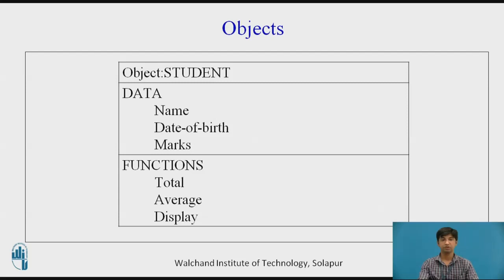The figure below shows the notations popularly used in object-oriented analysis and design. It basically consists of a student as an object, with various data members like name, date of birth, and marks, and functions like total, average, and display.